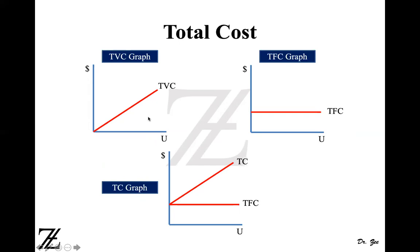We are now going to combine the total variable cost and total fixed cost graphs together to make a total cost graph. Total cost is basically total variable cost plus total fixed cost. The total fixed cost line is on the graph, and then total variable cost starts at the y-intercept where the total fixed cost line meets the y-axis. The area between the total fixed cost line and the total cost line represents total variable cost, and anything below the fixed cost line represents total fixed cost.